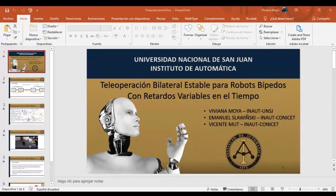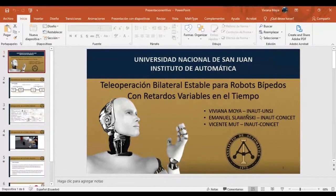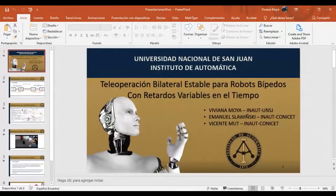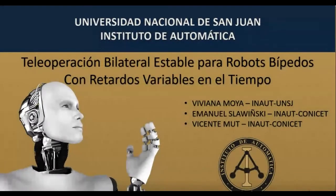Iniciamos la sesión de robótica. El primer trabajo es la operación bilateral estable para robots bípedos con retardos variables en el tiempo. Los autores son Vicente Mutt, Emanuel Zaninsky y Viviana Moya, quien lo va a presentar, pertenecientes al Instituto de Automática de la Universidad Nacional de San Juan.